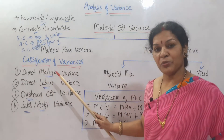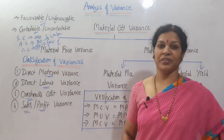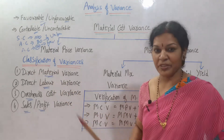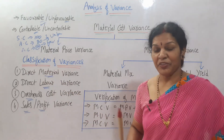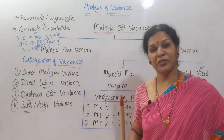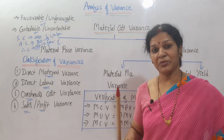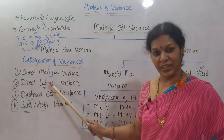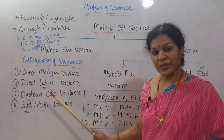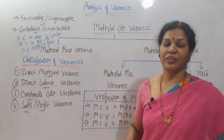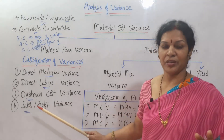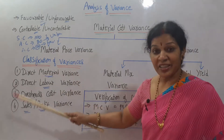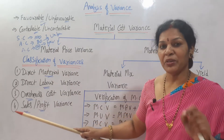Each and every variance will be discussed in depth, with different formulas and concepts for each. For direct material variance, there are different sub-types with different formulas. Similarly for direct labor variance and overhead cost variance — these three will be worked out with calculations and problems. We will also have a small introduction to sales or price variance.